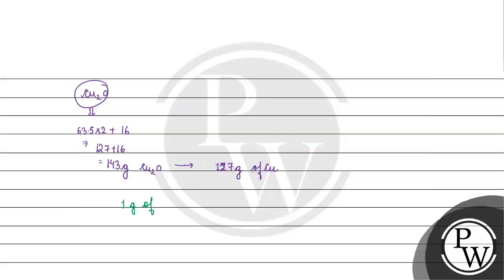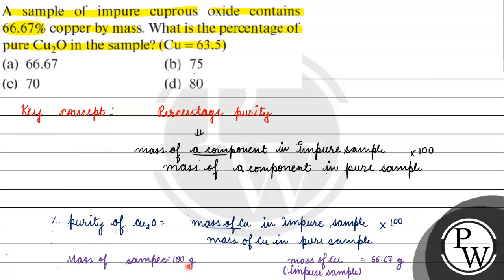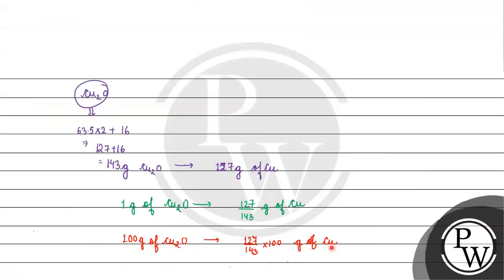If we have 1 gram of Cu2O, we have 127 by 143 gram of copper. And if we talk about 100 gram of Cu2O, then we have 127 by 143 into 100 gram of copper, which is 88.8 gram.